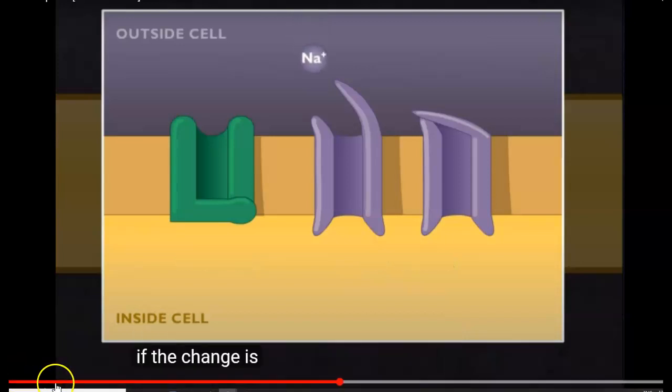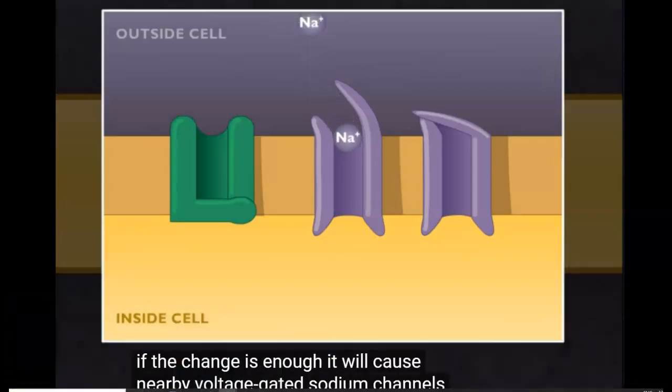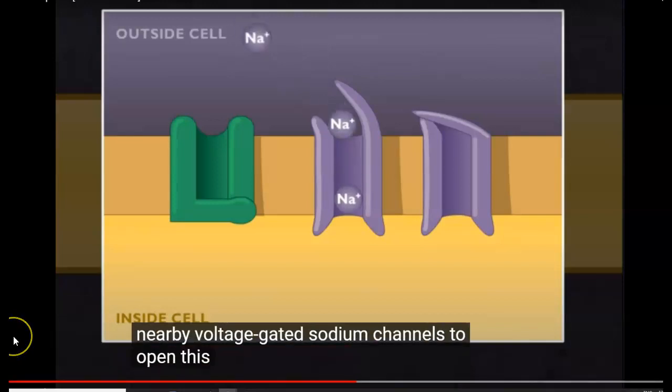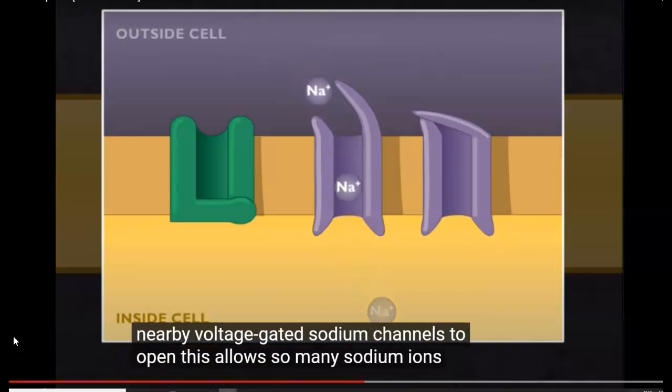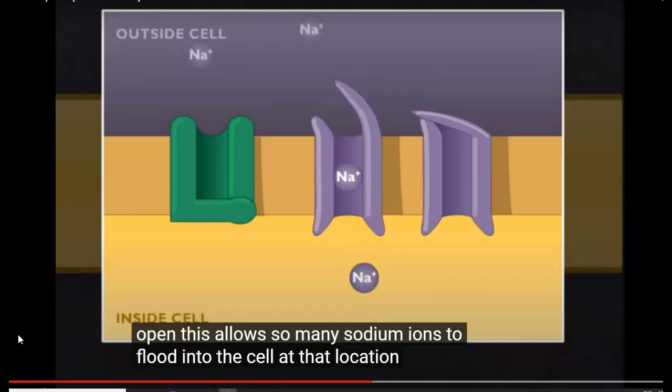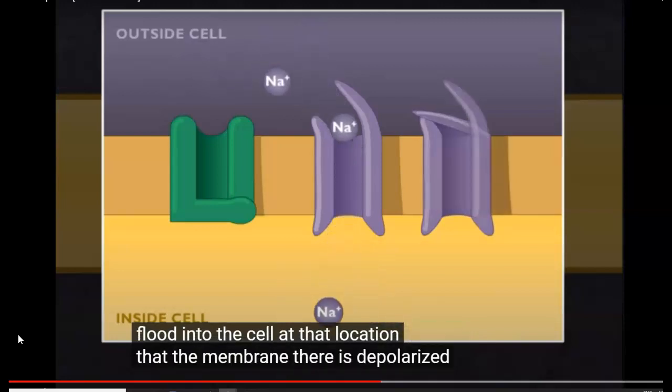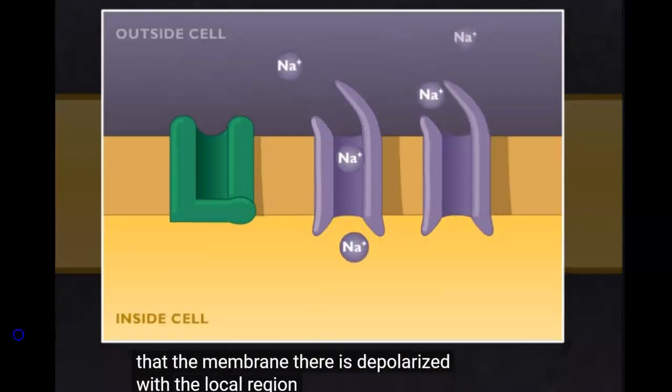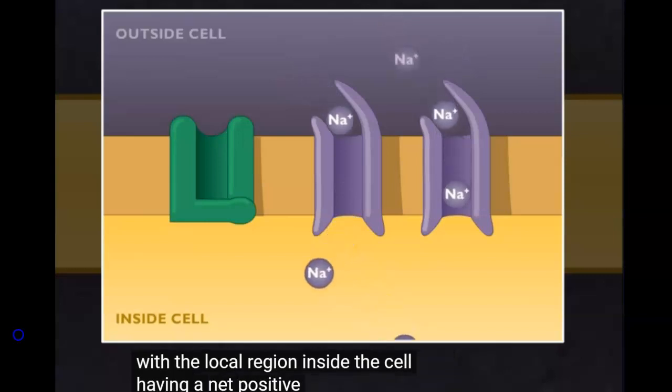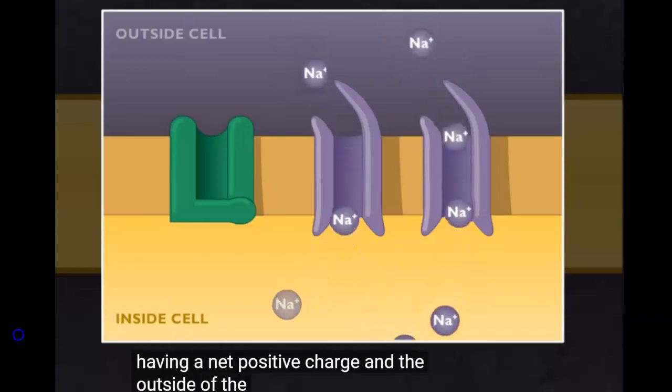If the change is enough, it will cause nearby voltage-gated sodium channels to open. This allows so many sodium ions to flood into the cell at that location that the membrane there is depolarized, with the local region inside the cell having a net positive charge and the outside having a net negative charge.